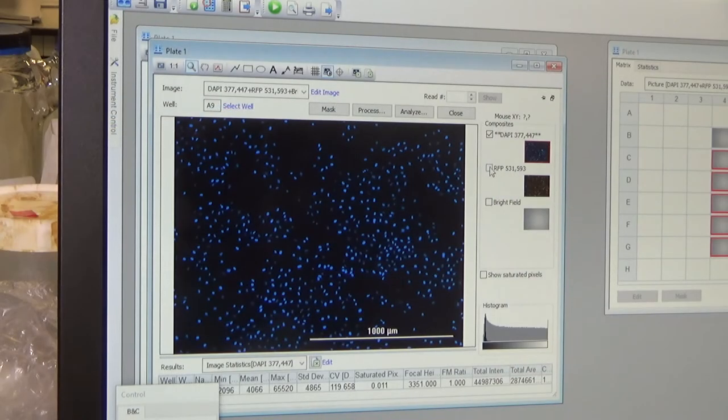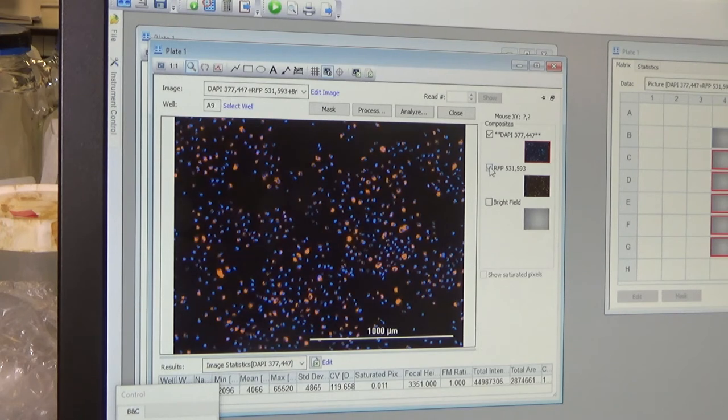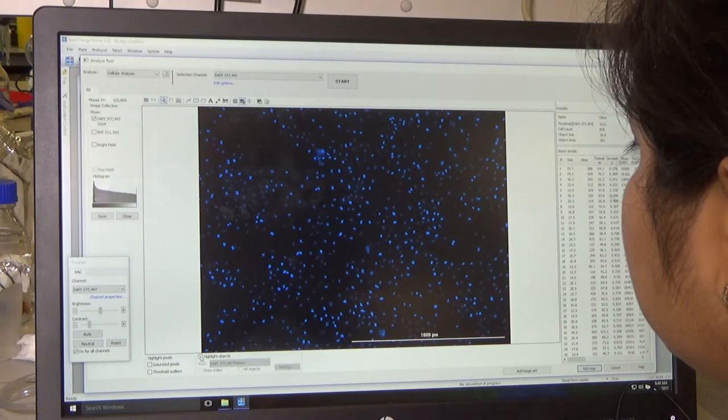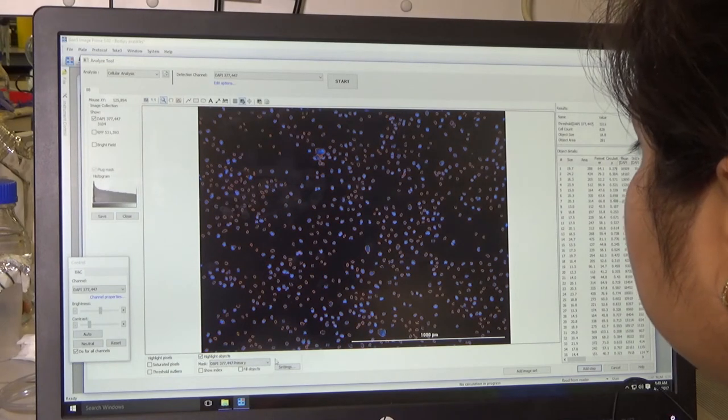In blue here we see the nucleus of the cells, and in red we have the nanoparticles. And the Gen5 software uses the nucleus dye to isolate individual cells.